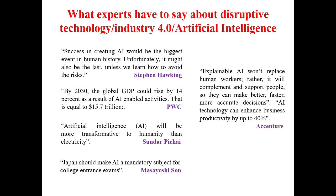What do experts have to say about disruptive innovations and AI? As per the legendary scientist Stephen Hawking, success in creating Artificial Intelligence would be the biggest event in human history. Unfortunately, it might also be the last, unless we learn how to avoid the risks. How you use science — either for mass destruction or for social welfare and humanity — decides the risk-benefit ratio.